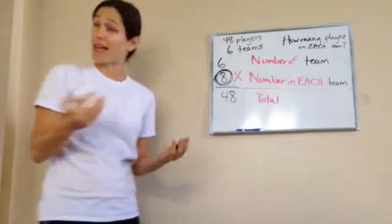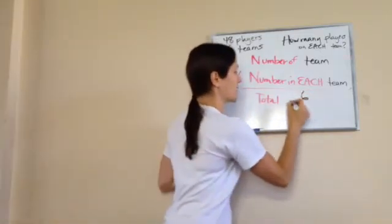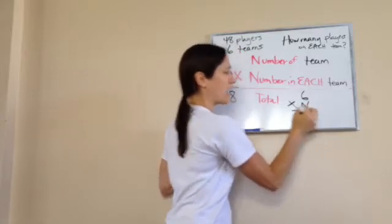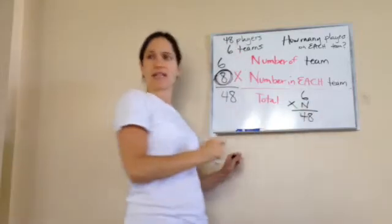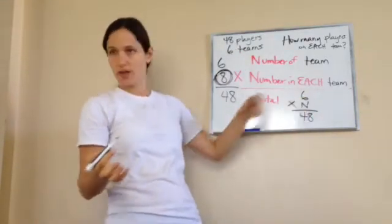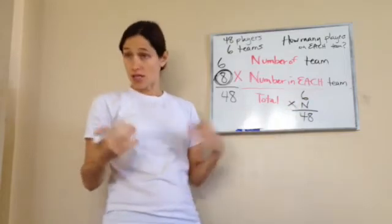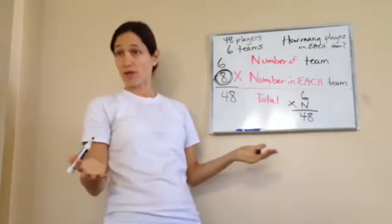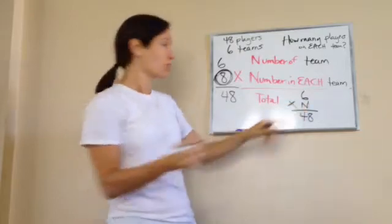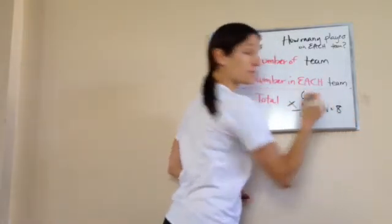You may see an equation like this: six times n equals 48. Remember that n is not anything special — it's just a letter they put there to help you figure out what n is. You just told me what n was: n equals eight.